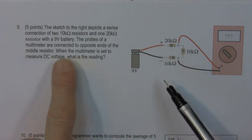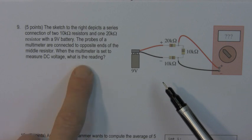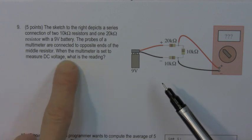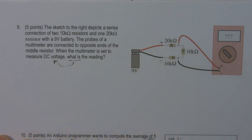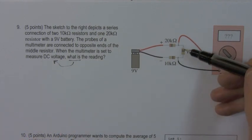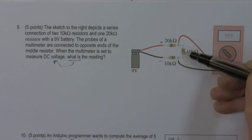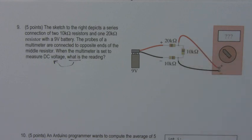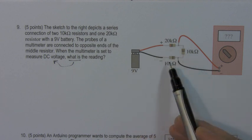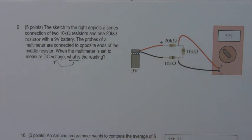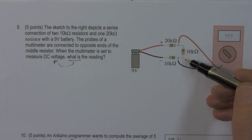It says when the multimeter is set to measure DC voltage, what is the reading? What is the reading, meaning what is the DC voltage reading in this circumstance? Basically it's asking what is the voltage drop across this resistor. We know the voltage applied to the circuit, we know the resistors in the circuit, so we have to find the voltage drop across this resistor somehow.